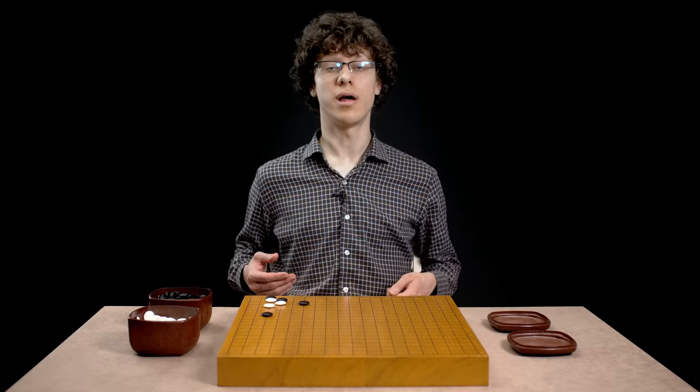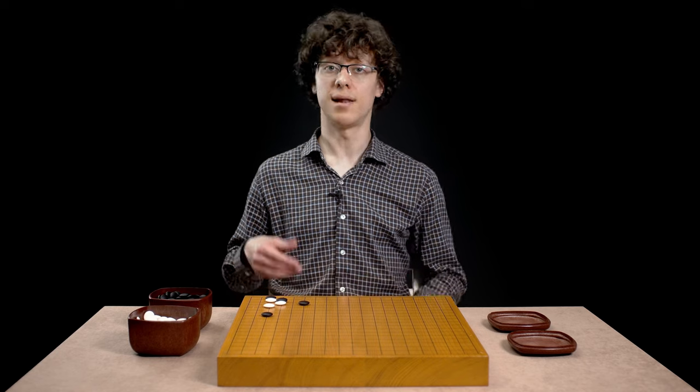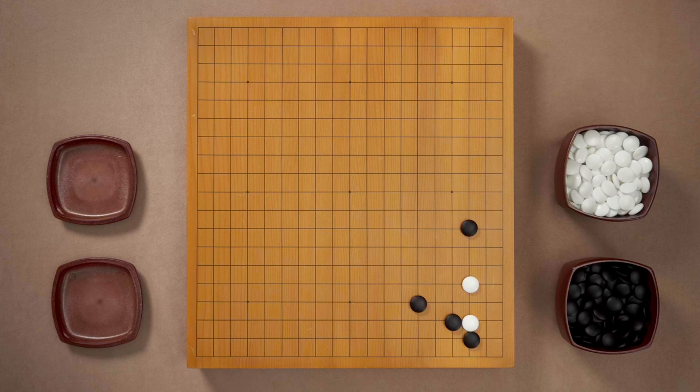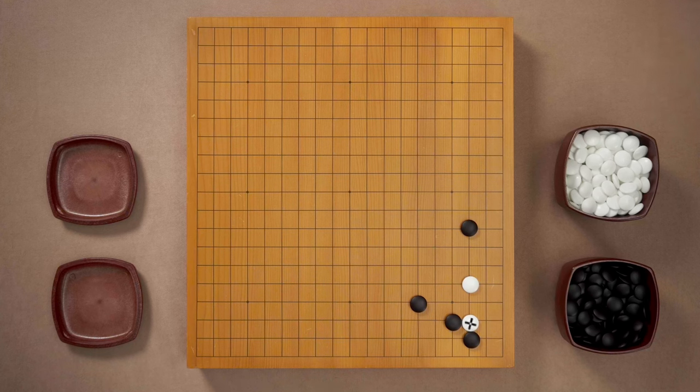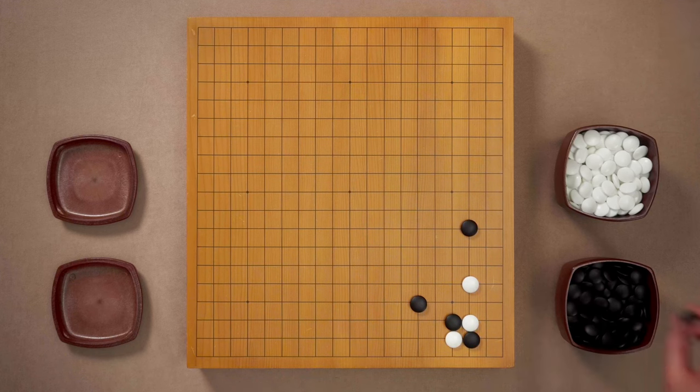If you're ready to learn one a bit more advanced technique of starting a ko then let's look again at the same joseki. If white doesn't want to lose this stone in the corner then instead of playing the tiger's mouth white could also cut. Your opponent might be quite surprised with this move. What is white doing? Couldn't black just capture this cutting stone?